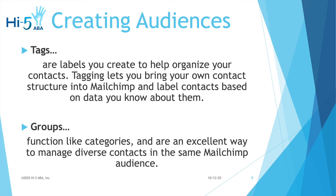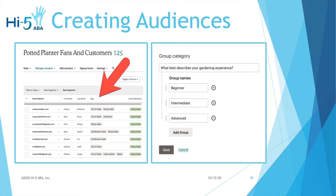When it comes to organizing your audiences, the two best tools they have are tags and groups. Tags are just labels — you can use any sort of label that you'd like and assign those labels to any contact you want. Tagging lets you bring your own contact structure into Mailchimp and label contacts based on data that you know about them, so you can personalize those as much as you want. You can have up to around 20 different tags associated with any single contact.